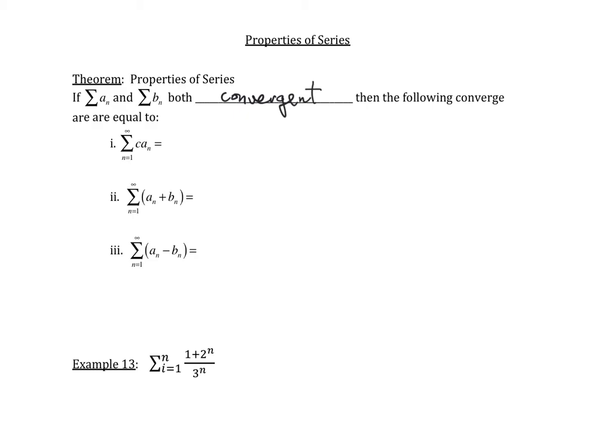Then the following series also converge, and we're going to show what they're equal to. For this first property, we have a constant times every single term in the series. The first property says we can basically factor this constant out. So this is going to be equal to our constant c times the infinite sum of a_n, as n ranges from 1 to infinity.